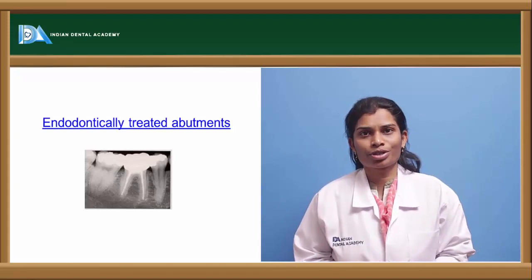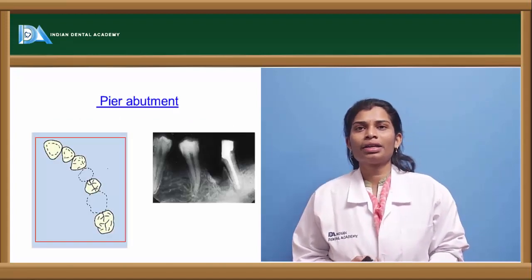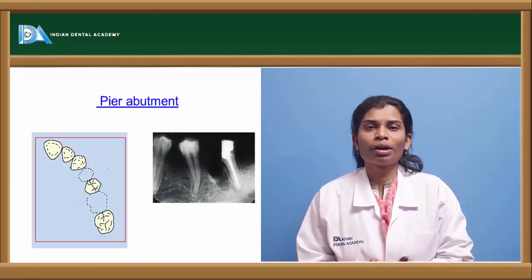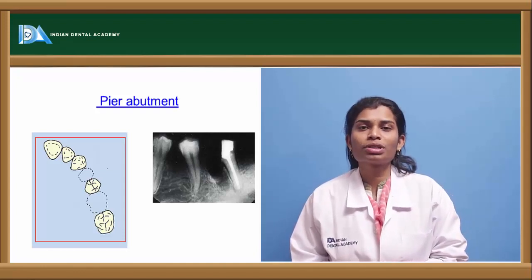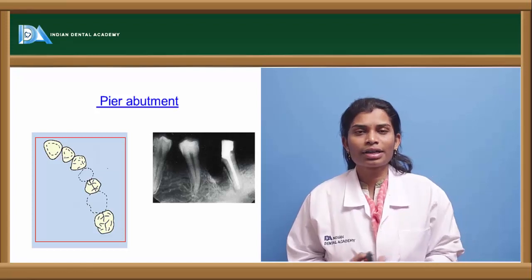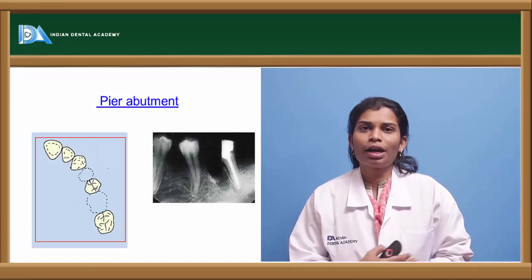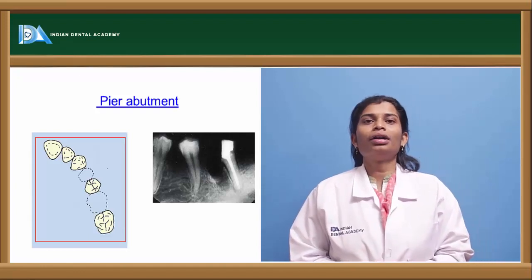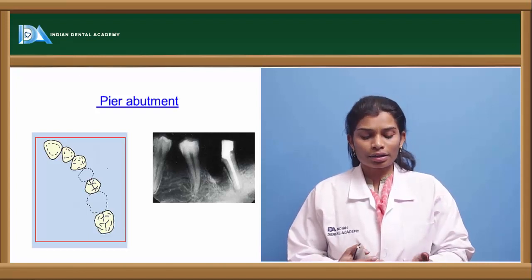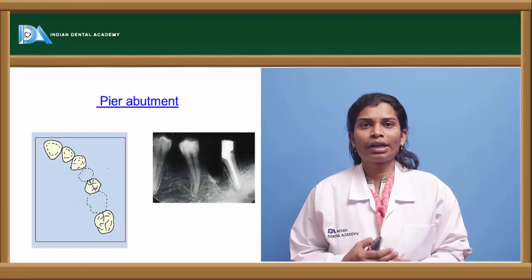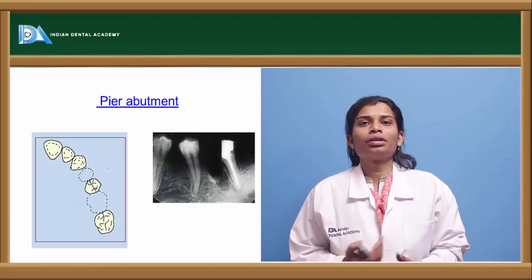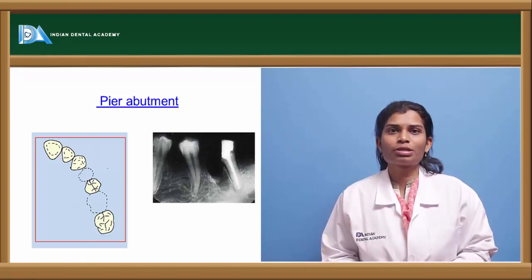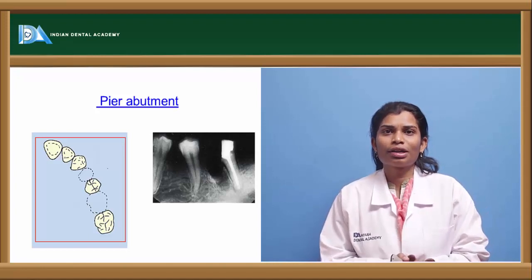The pier abutment case is one where there is a lone-standing abutment between two edentulous spaces — an abutment bounded on either side by edentulous spaces. In such cases, secondary abutments on the outer sides of the edentulous spaces are required. The increased span length leads to more flexure. A non-rigid connector with a key-and-keyway mechanism is used — the key is located in the central lone-standing pontic and the keyway in the distal-most abutment — to provide a stress-breaking mechanism and prevent direct load transfer to the central abutment.